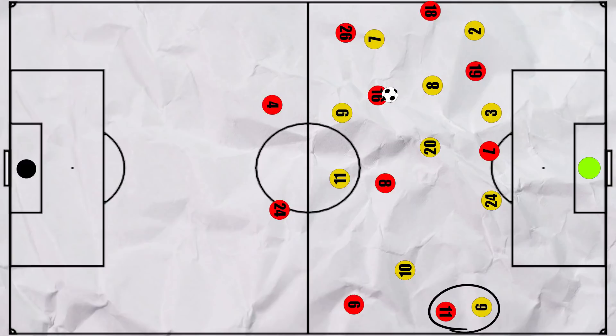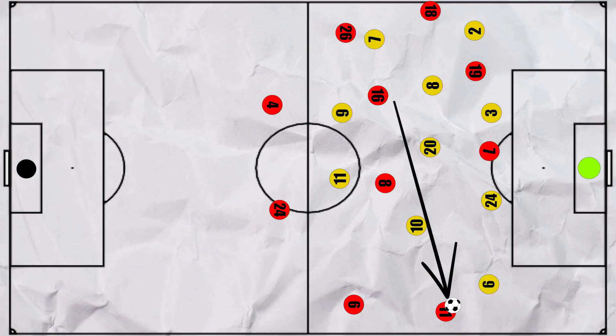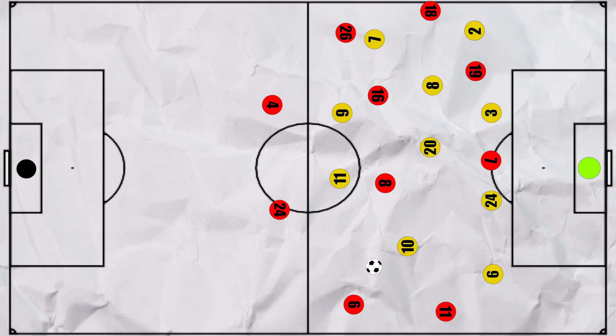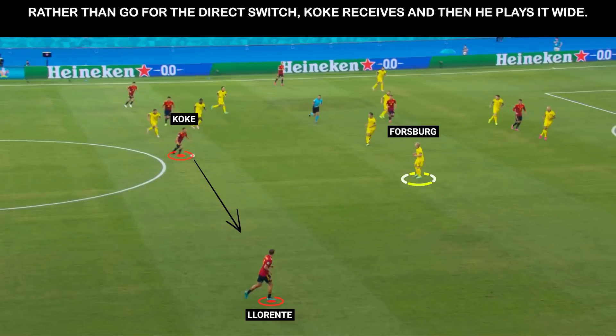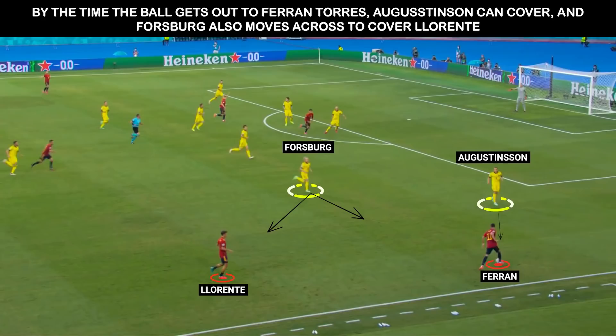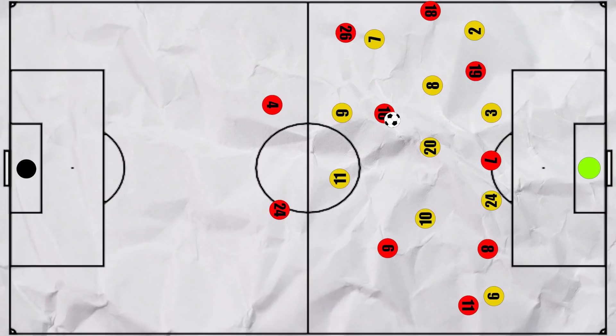This meant that Augustinsson could afford to stay wider in anticipation of the switch. In addition, most of the time the switch was not direct, which would have forced Sweden's compact defensive block to shift across quickly, creating potential gaps whilst tiring them out. Instead, Spain played through the midfield, going through Koke first, who would then play it out to Llorente, and Forsberg would then have had the time to move out to defend. It would have been interesting to see Ferran move into the half space earlier to allow Llorente to receive in more space to attack and cross. Alternatively, perhaps Koke could have pushed into the half space to create a similar effect, although this might have compromised Spain's counterpressing shape.